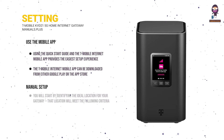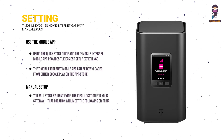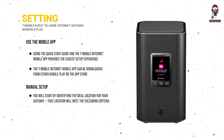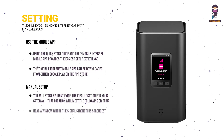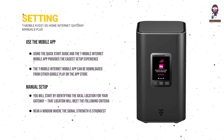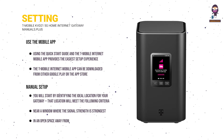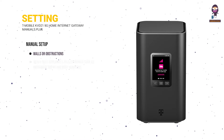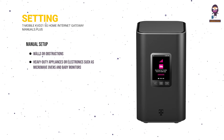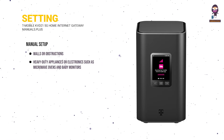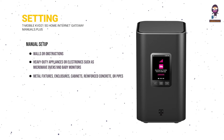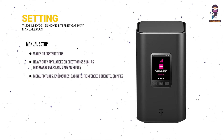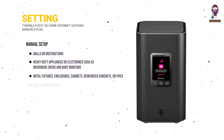Manual Setup: You will start by identifying the ideal location for your gateway. That location will meet the following criteria: near a window where the signal strength is strongest; in an open space away from walls or obstructions, heavy-duty appliances or electronics such as microwave ovens and baby monitors, metal fixtures, enclosures, cabinets, reinforced concrete, or pipes.